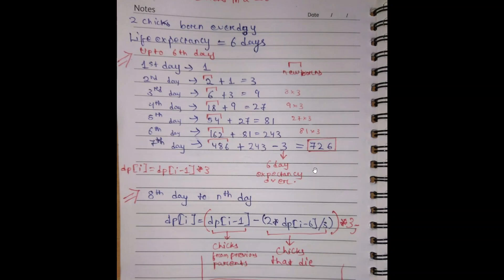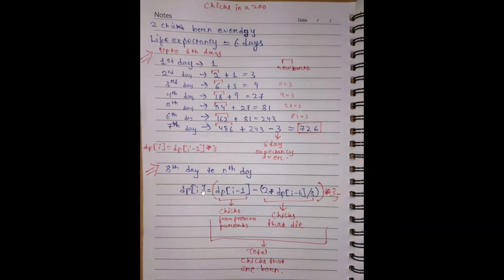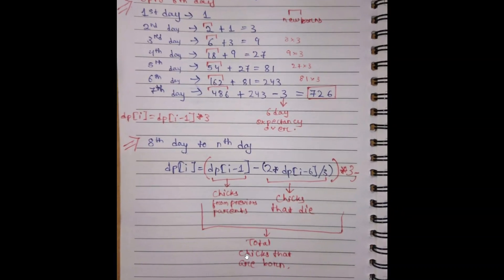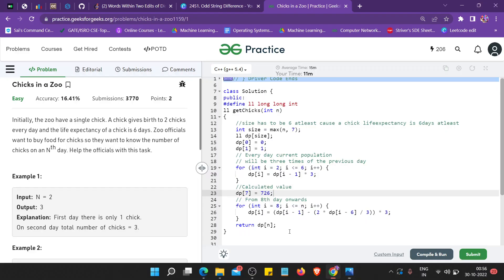After the sixth day — on the seventh day — we get 726. From the eighth day to the Nth day, we follow a different DP: take the previous day's chick count, subtract the chicks that die (which is two-thirds of them), then multiply by three to account for newborns. This gives us the total chicks including both the newborns and the already-present parents.